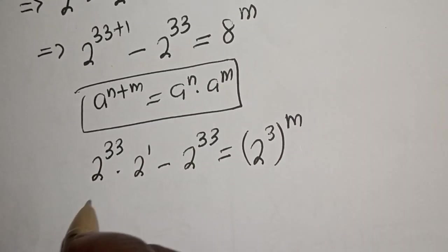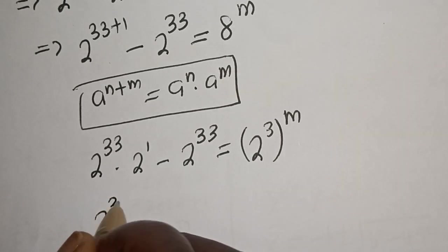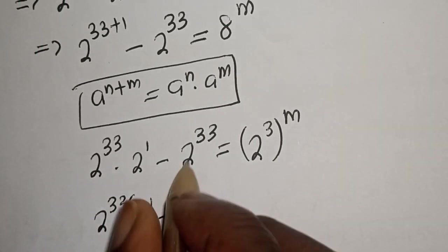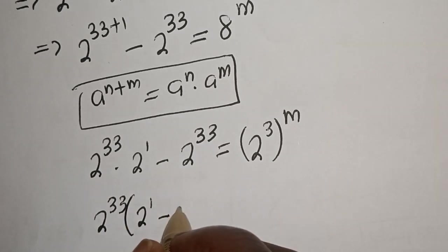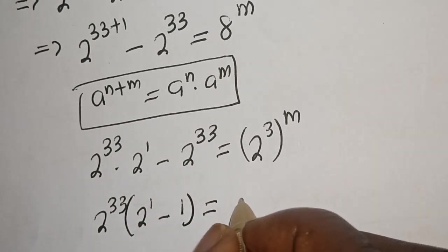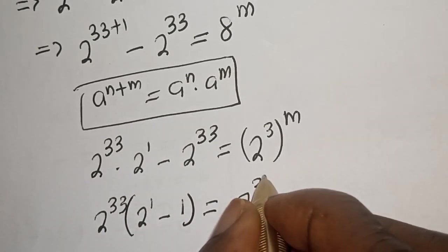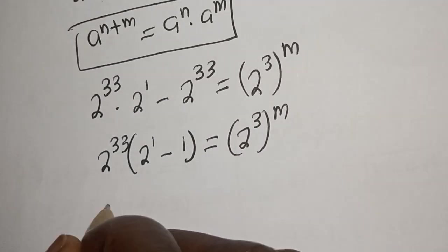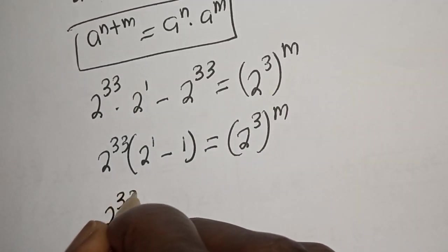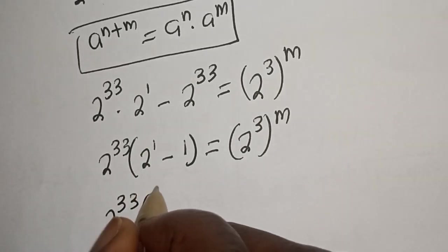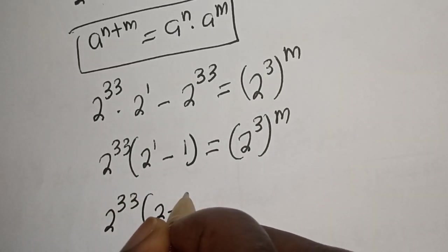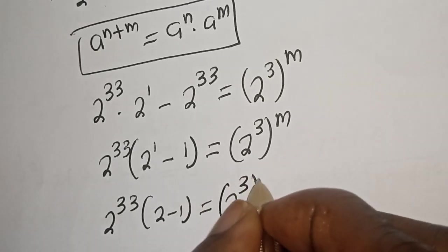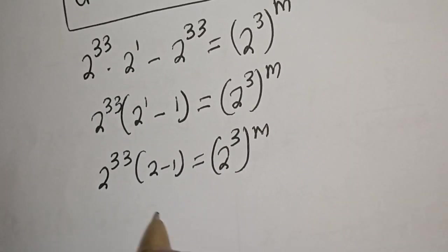Then 2 raised to power 33 is common here. We factor out 2 raised to power 33: bracket 2 raised to power 1 minus 1, is equal to 2 raised to power 3 to the power of m. So we have 2 raised to power 33, bracket 2 minus 1, is equal to 2 raised to power 3 to the power of m.